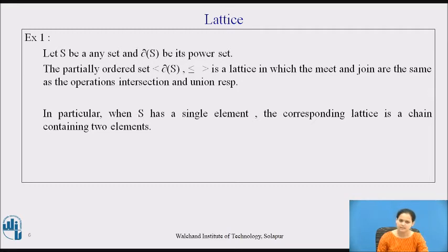When S has a single element, the number of elements present in the given set S equals 1. So in this case we have n=1. In that case, the number of subsets possible will be 2^1 = 2, which will be φ the empty set and the given set itself containing the single element. So we say the corresponding lattice is a chain containing two elements: the φ the empty set and the given set itself containing the single element.